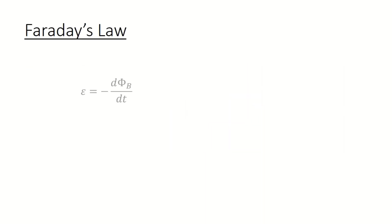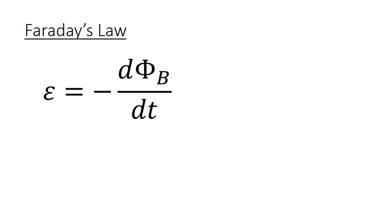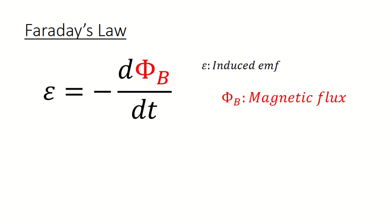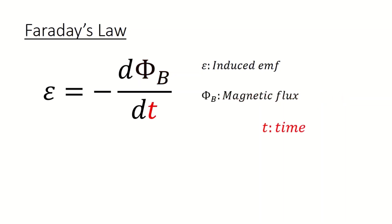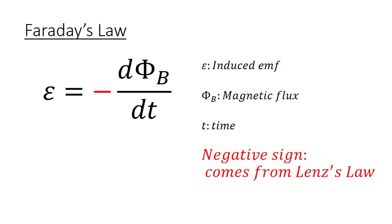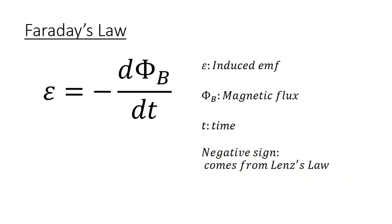Electromagnetic induction is described by Faraday's law. Faraday's law says that E equals minus d phi_B by dt, where E is the induced emf, phi_B is the magnetic flux, and t is the time. Notice the presence of the negative sign, which comes from Lenz's law, which we will talk about.